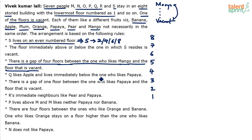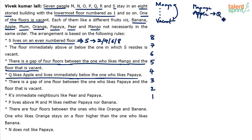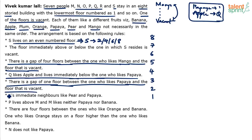Q likes apple and lives immediately below the one who likes papaya. So if this is papaya, immediately below papaya should be apple, liked by Q. There is also a gap of one floor between the one who likes papaya and the floor that is vacant — so it can be vacant-dot-papaya or papaya-dot-vacant.